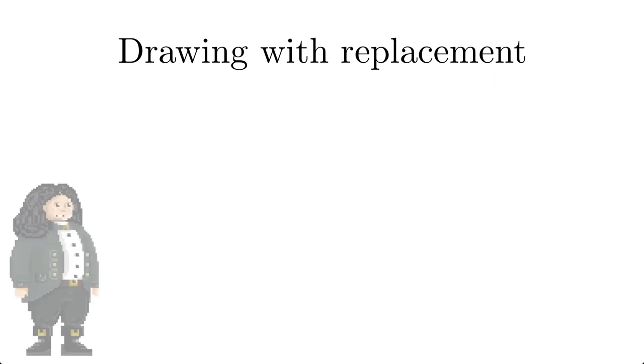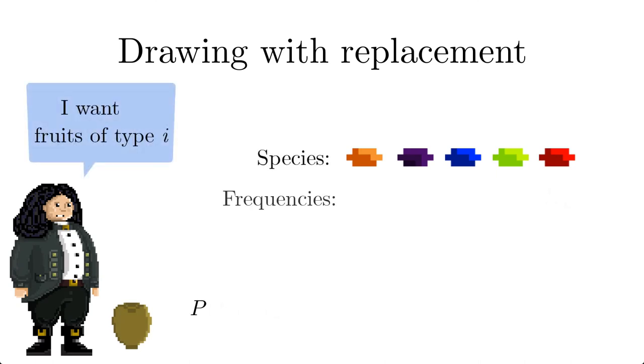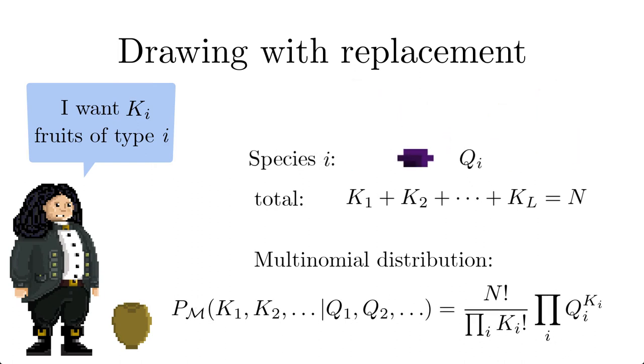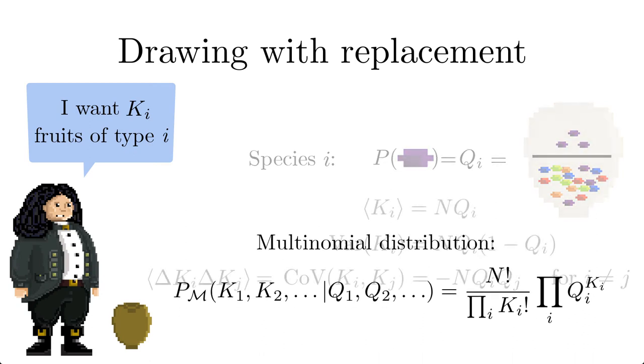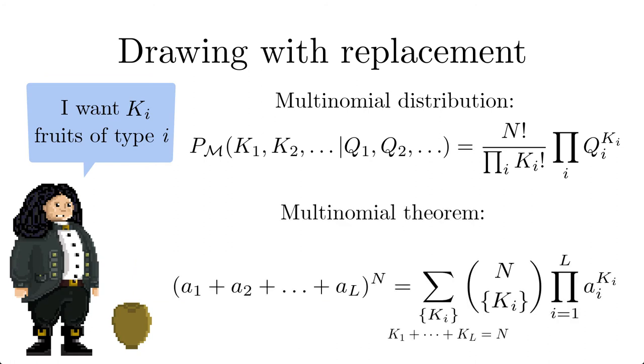The generalization from 2 to l colors that can be drawn from the pot is straightforward. The probability for obtaining the color i with a frequency of k sub i in a total number of draws n is given by the multinomial distribution. The term q sub i describes the probability for drawing color i in a single draw. So in our example this is the relative frequency of the individual colors. Interestingly for the fluctuations there is a negative correlation since the total number of n is fixed. We can also readily generalize the binomial theorem to the multinomial theorem.